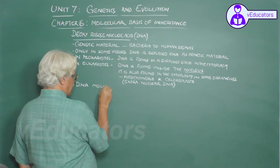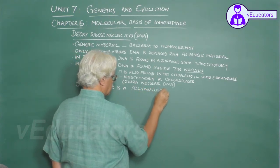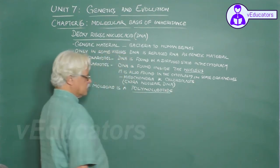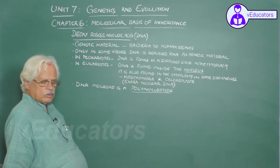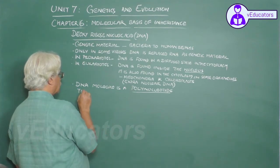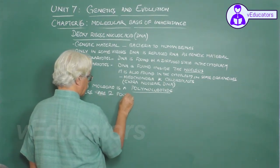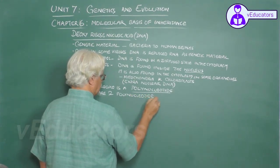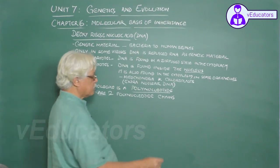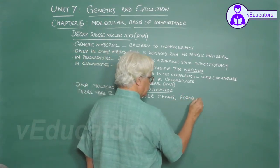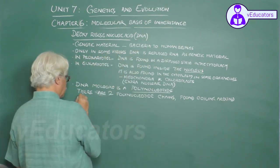DNA can be described as polynucleotide. DNA is composed of a large number of billions and billions of monomers called nucleotides. So DNA molecule is a polynucleotide. There are two polynucleotide chains in the DNA molecule found coiling around each other.